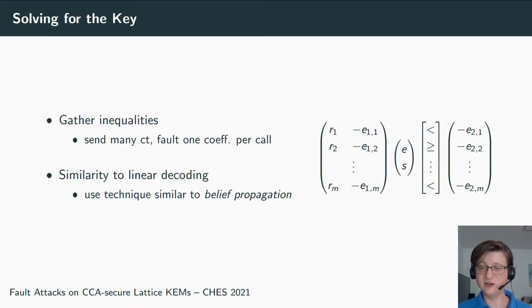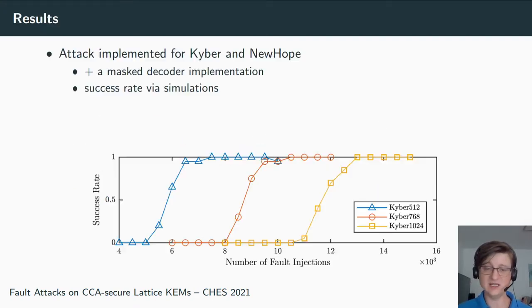I'll skip over the many details which are involved in this kind of decoding process. So we decode this code and we find e and s. We attacked this implementation for Kyber and NewHope, so this shows that this attack works for multiple schemes. We also attacked a masked decoder implementation. Of course, masking as such is not a faulting countermeasure but more a side-channel countermeasure, but still, since our attack is implementation-specific and we skip over an instruction, we had a look if attacks still work. We determined the success rate of the attacks via simulations, so we determined the success rate as a function of the number of faulted decapsulations.